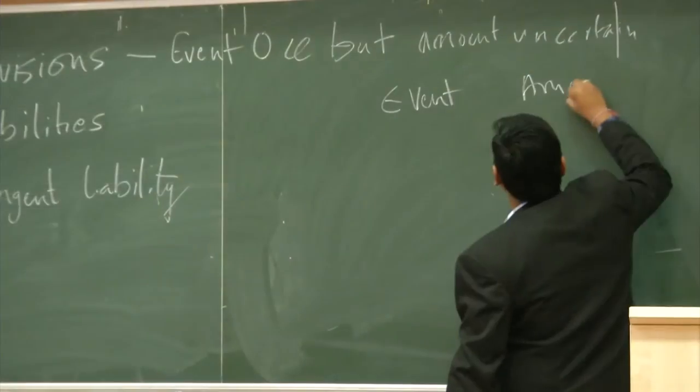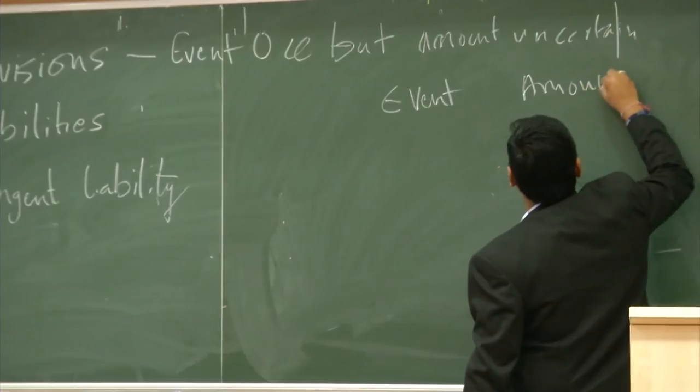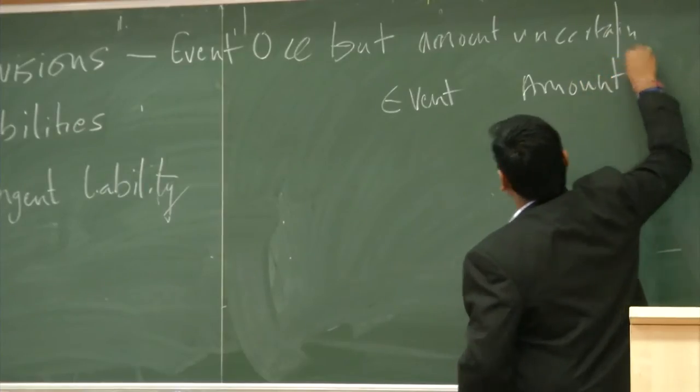And contingent liability? It's uncertain — contingent liability is an uncertain event. Event is uncertain, amount is also uncertain. So two things: event and amount are both uncertain.